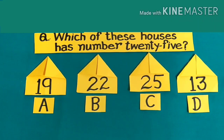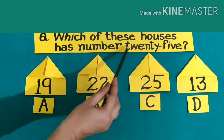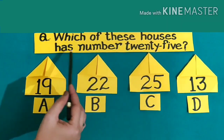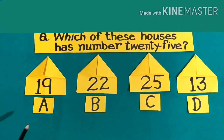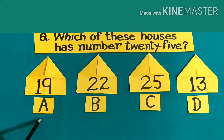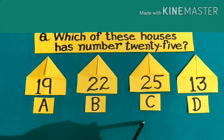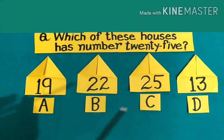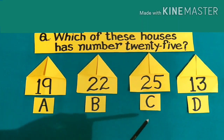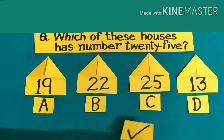Now students, we will do a question related to numbers. Our question is: which of these houses has number twenty-five? Here we have four houses — A: nineteen, B: twenty-two, C: twenty-five, and D: thirteen. Our correct answer is C: twenty-five. So we will tick the answer C.